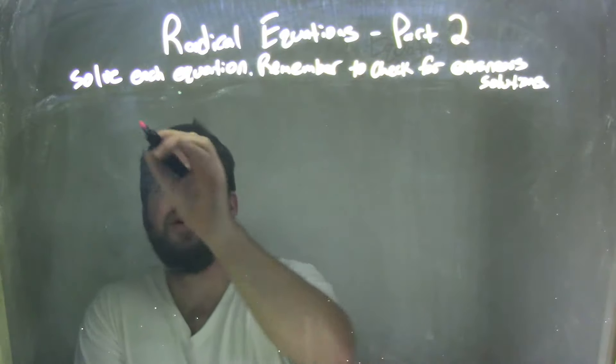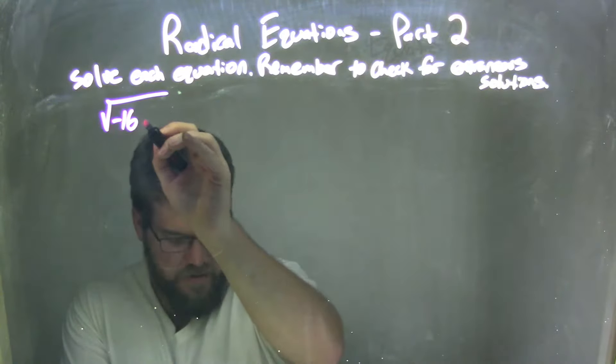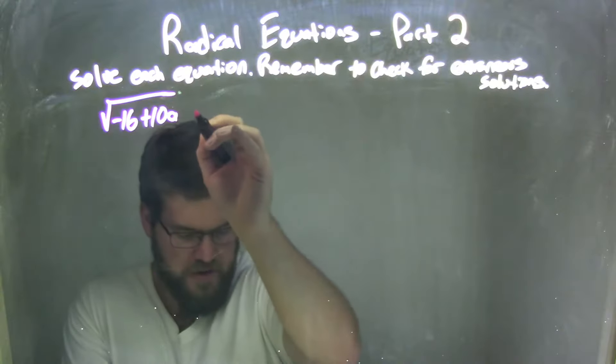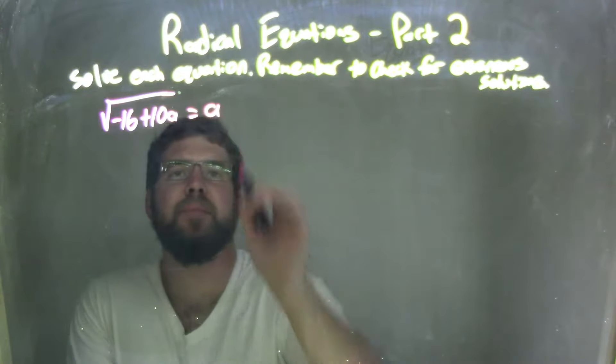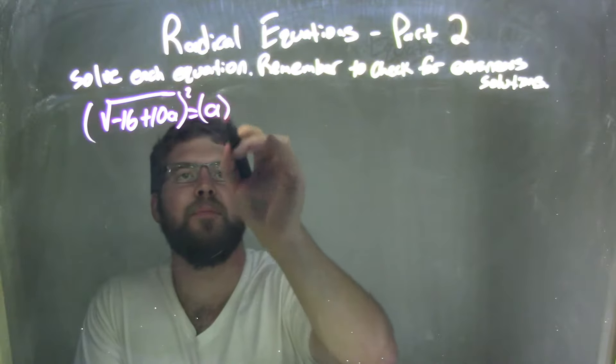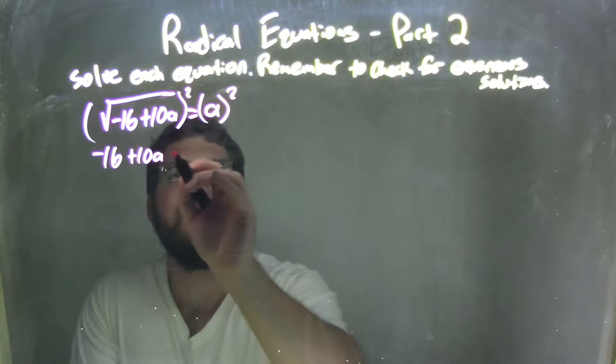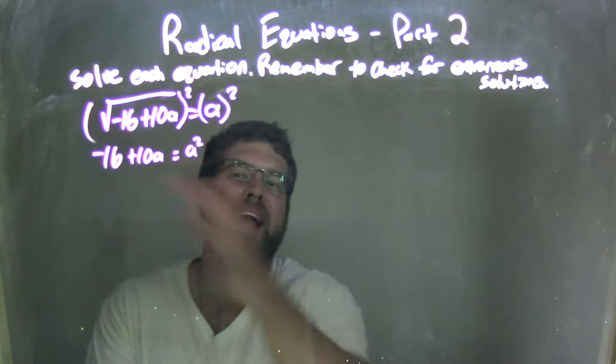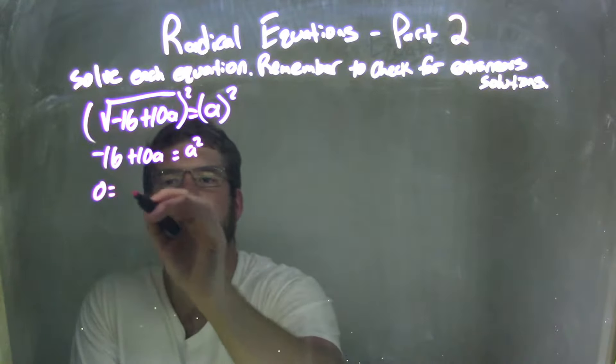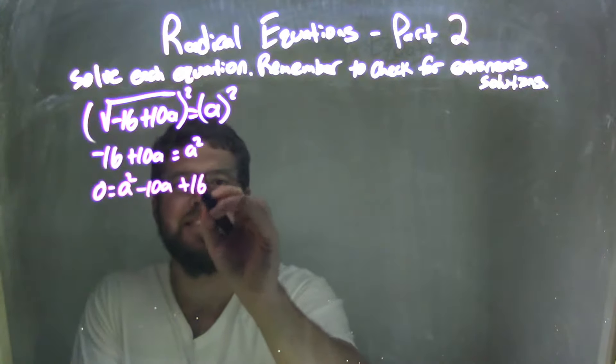So if I was given this equation, the square root of negative 16 plus 10a equals a. Well, first up, I need to square both sides. Let's get rid of that radical. Squaring both sides, negative 16 plus 10a equals a squared. Let's bring everything over to the right-hand side, leaving 0 equals a squared minus 10a plus 16.